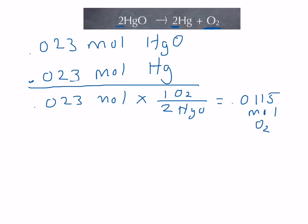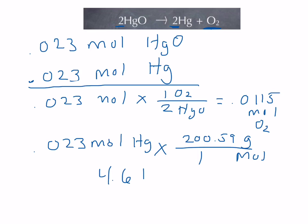How many grams of mercury are formed? So now that we have the moles of mercury, we can get, by using the molar mass, the mass of mercury. And there are 200.59 grams per one mole of mercury. And that leaves us with 4.61 grams of mercury.